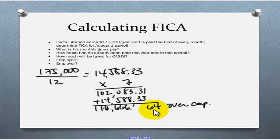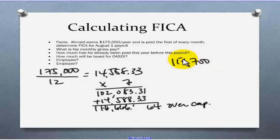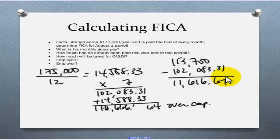Now what we need to do is figure out how much is going to be taxed for OASDI. We'll take how much would ever be taxed, $113,700, and subtract out what he's already been paid, $102,083.31. When we do that, we get how much is left to be taxed and that's $11,616.69. So, of this amount that he's getting paid on August 1st, $14,583.33, only $11,616.69 is going to be taxable for OASDI. We'll multiply that by our tax rate of 6.2% or .062 and we get $720.23.